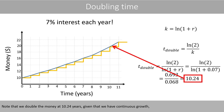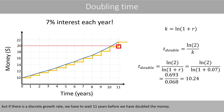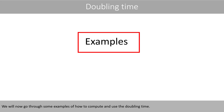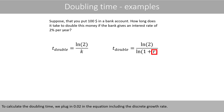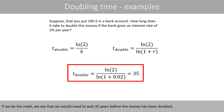Note that we doubled the money at 10.24 years given continuous growth, but if we have a discrete growth rate, we have to wait 11 years before the money has doubled. Now, suppose you put $100 in a bank account with an interest rate of two percent per year. To calculate the doubling time, we plug in 0.02 in the equation including the discrete growth rate. If we do the math, we see that we would need to wait 35 years before the money has doubled.